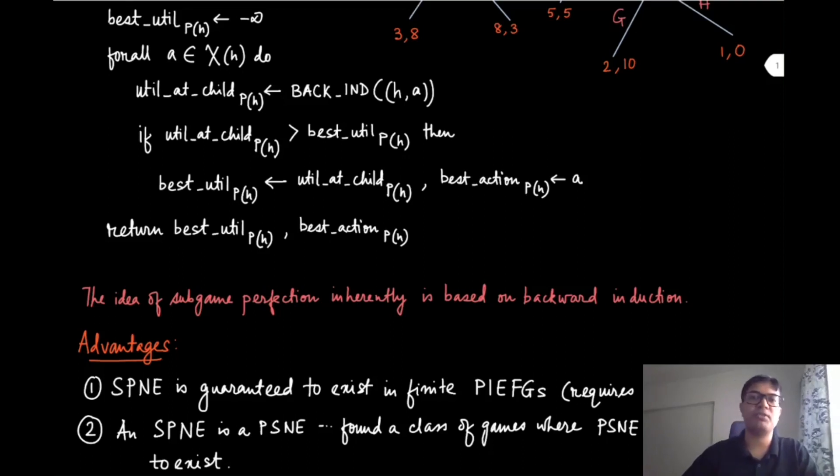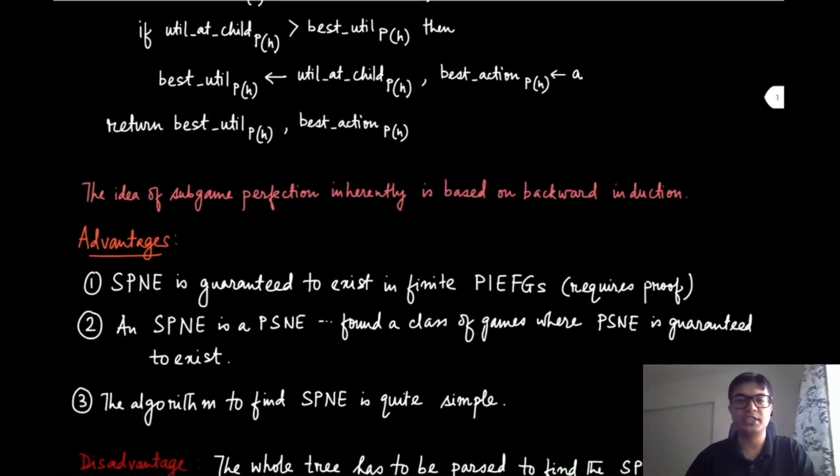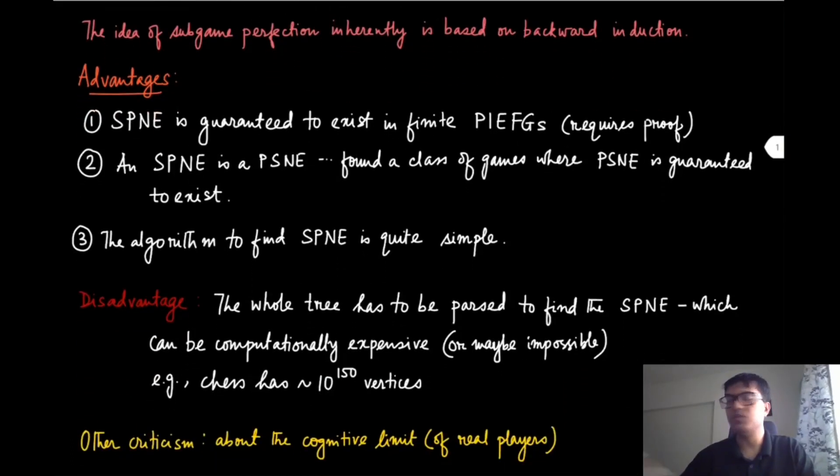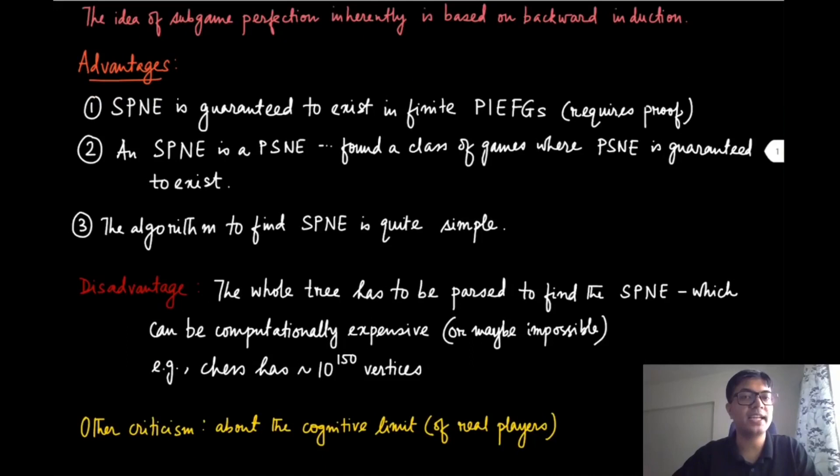There are several advantages for this kind of game—perfect information extensive form games. The first thing we observe is that subgame perfect Nash equilibrium is guaranteed to exist in finite PIEFGs. The intuition is that it is basically based on the fact that you have an algorithmic way of showing that the subgame perfect Nash equilibrium exists, and the algorithmic way is the backward induction algorithm. You can show that this will always converge to a subgame perfect Nash equilibrium.